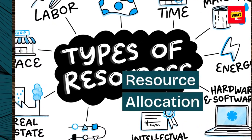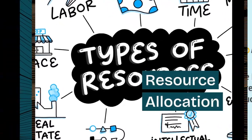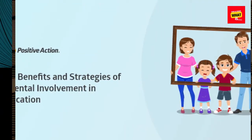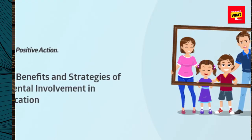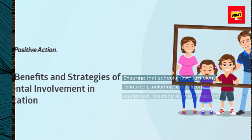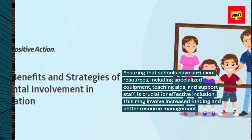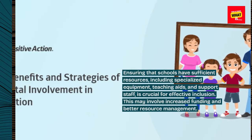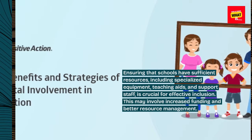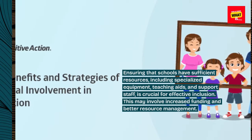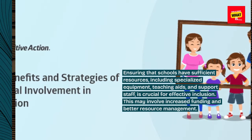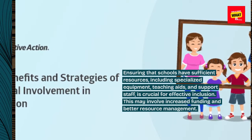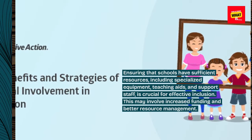Resource allocation. Ensuring that schools have sufficient resources, including specialized equipment, teaching aids, and support staff, is crucial for effective inclusion. This may involve increased funding and better resource management.